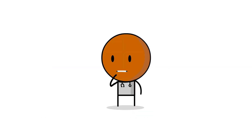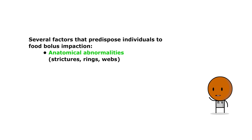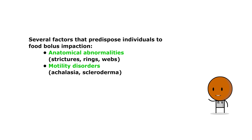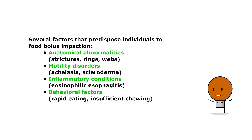Several factors can predispose individuals to food bolus impaction, including anatomical abnormalities such as strictures, rings, webs, or motility disorders such as achalasia or scleroderma, even inflammatory conditions like eosinophilic esophagitis, and behavioral factors such as rapid eating and insufficient chewing.